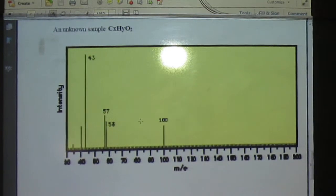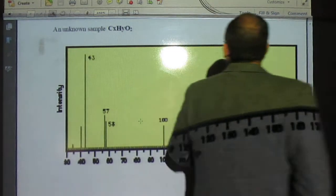So, let's go over this last example. It says an unknown sample CxHyO2 gives this mass spec. Write a molecular structure for the molecule.